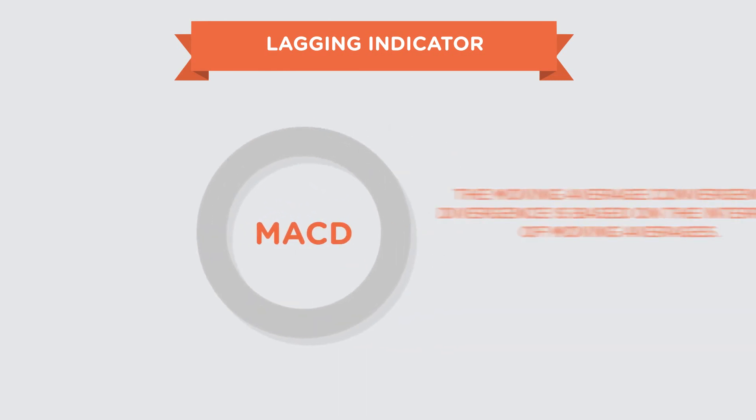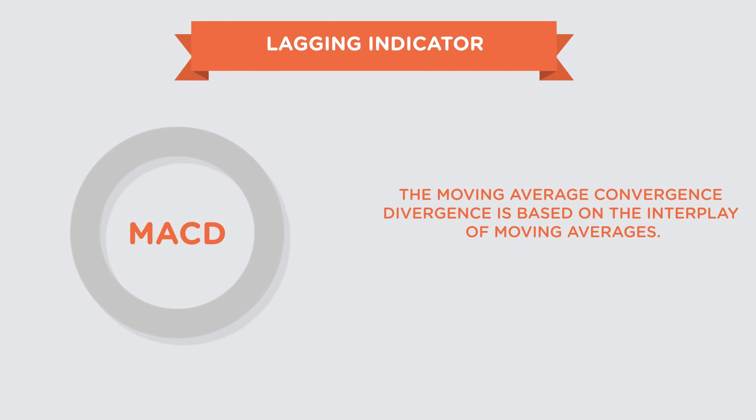The MACD is actually pronounced as the MACD. It's short for moving average convergence divergence. Now since the MACD is based on the interplay of moving averages, it's categorized as a lagging indicator. Nevertheless, due to its simplicity and accuracy, it's arguably the most used indicator for all kinds of markets.